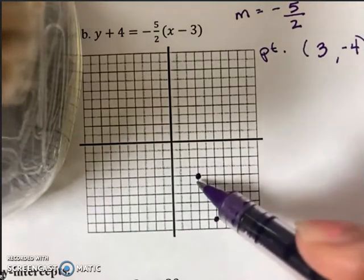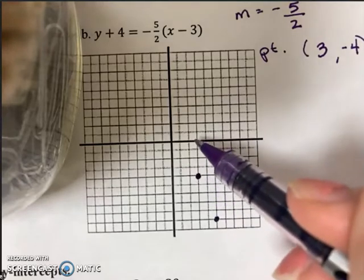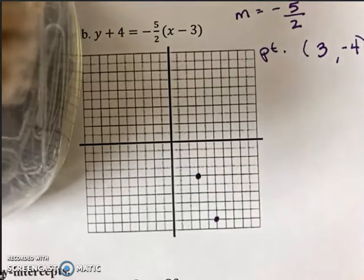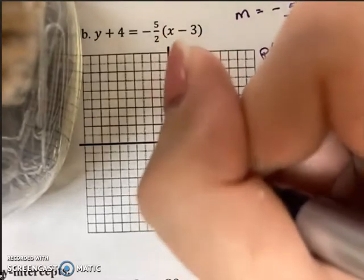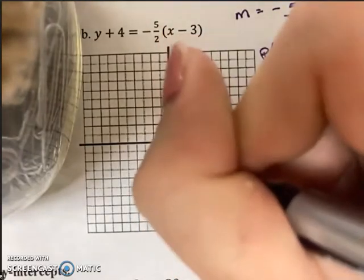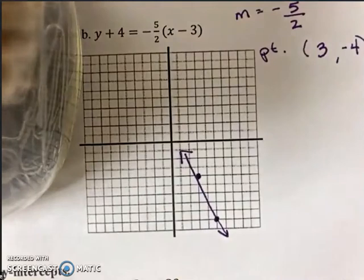I could have also moved up 5 and left 2 if I wanted to, but I'm not going to for now. Just connect your points, and there's my linear function.